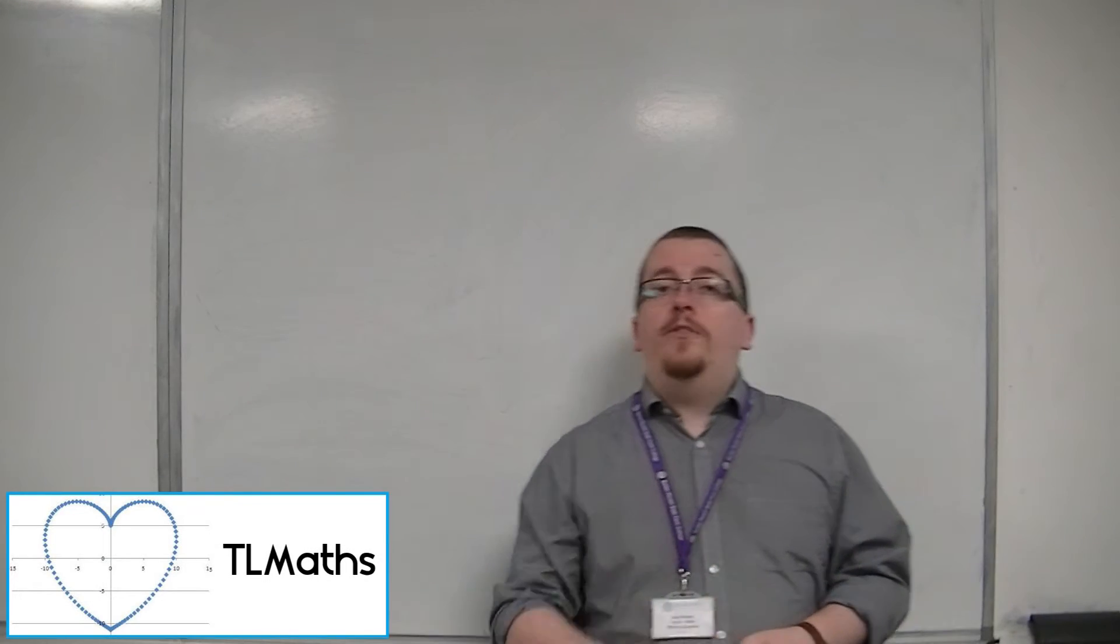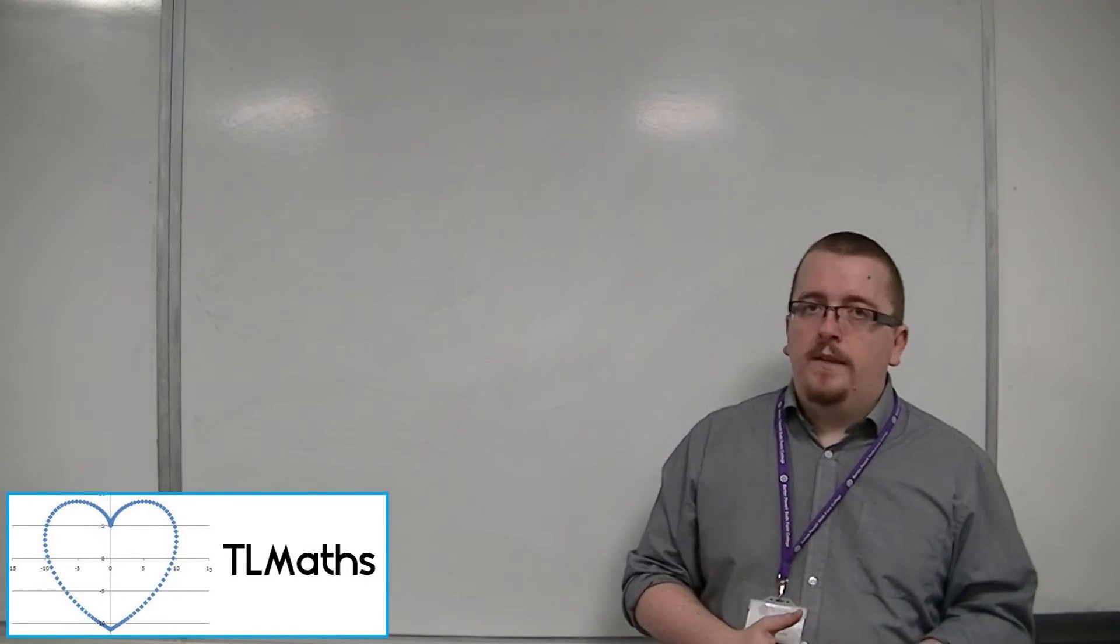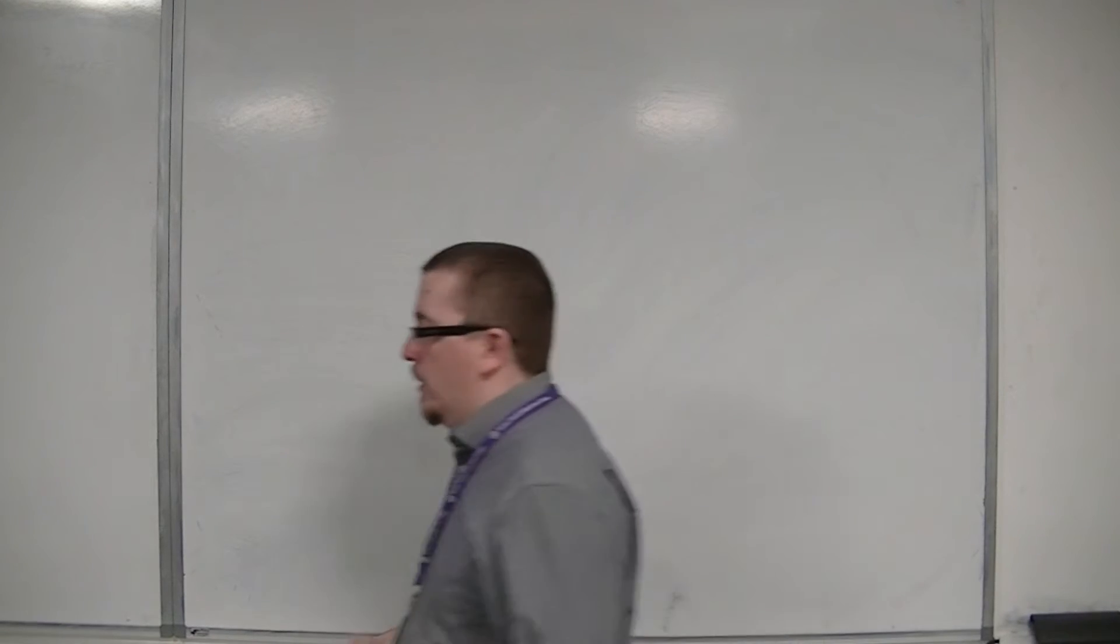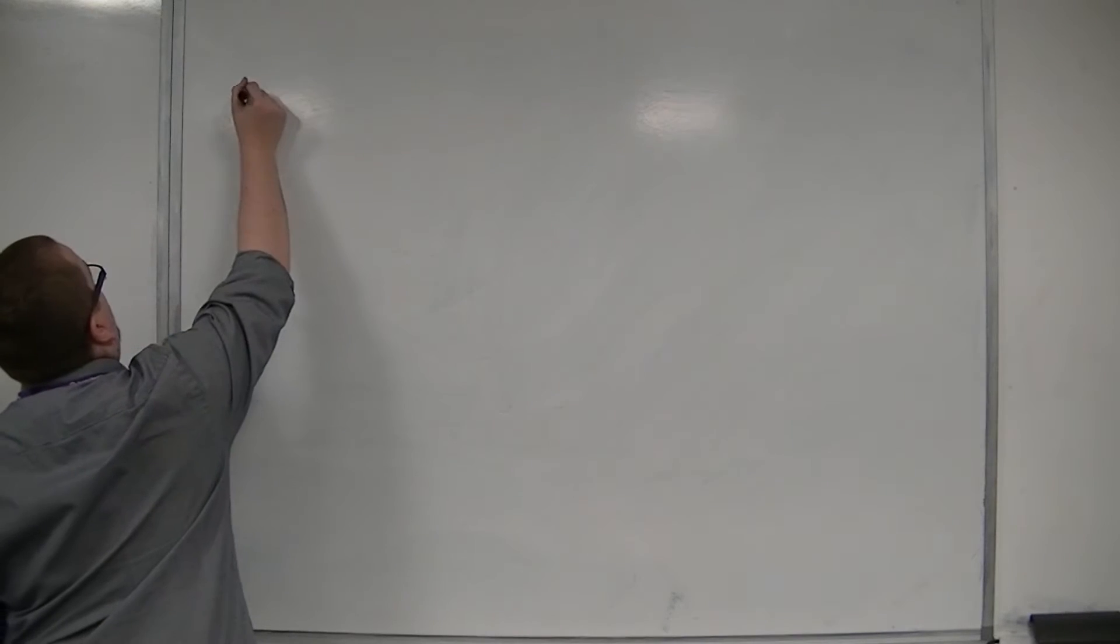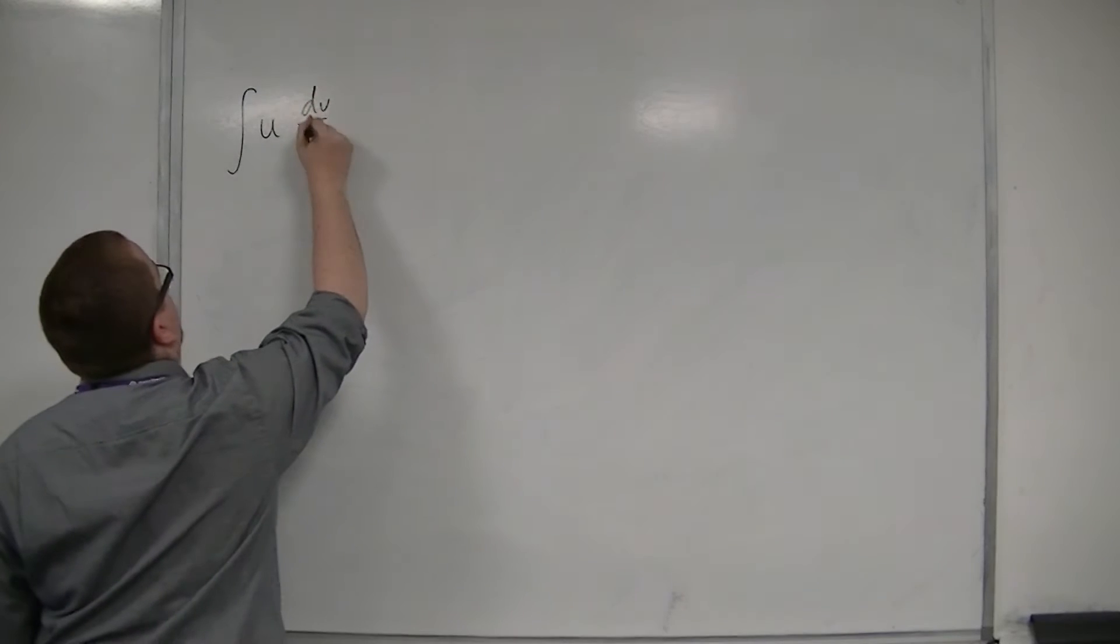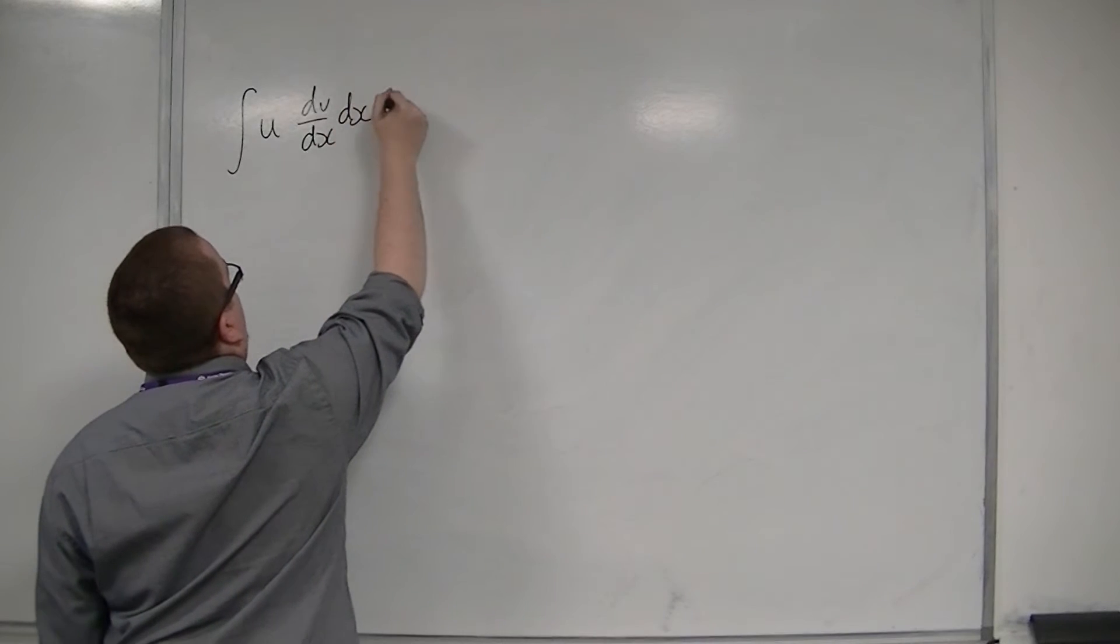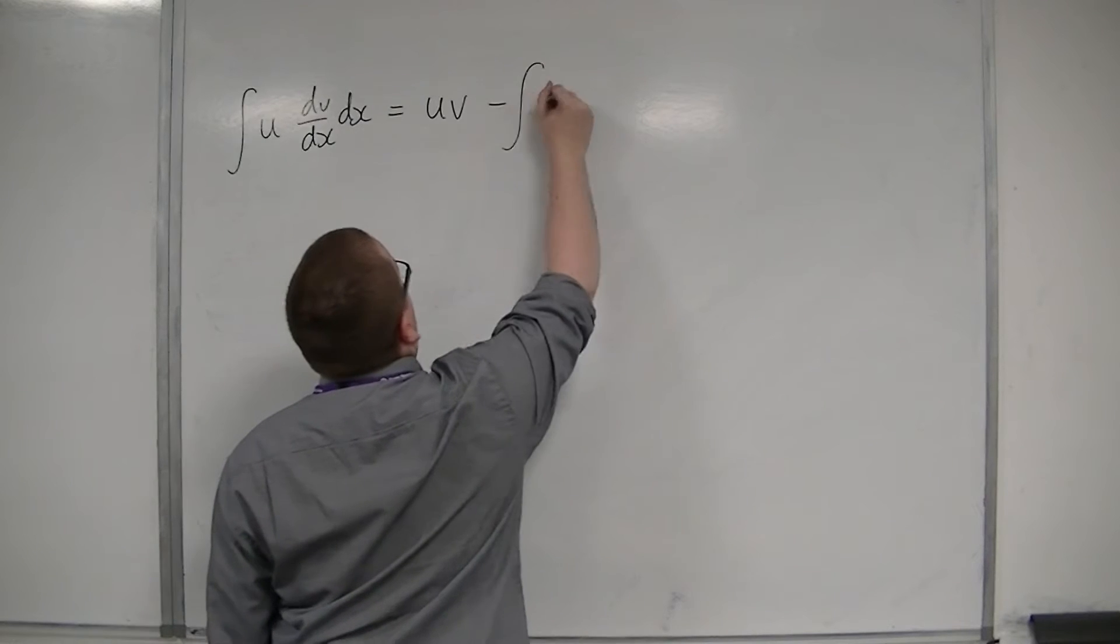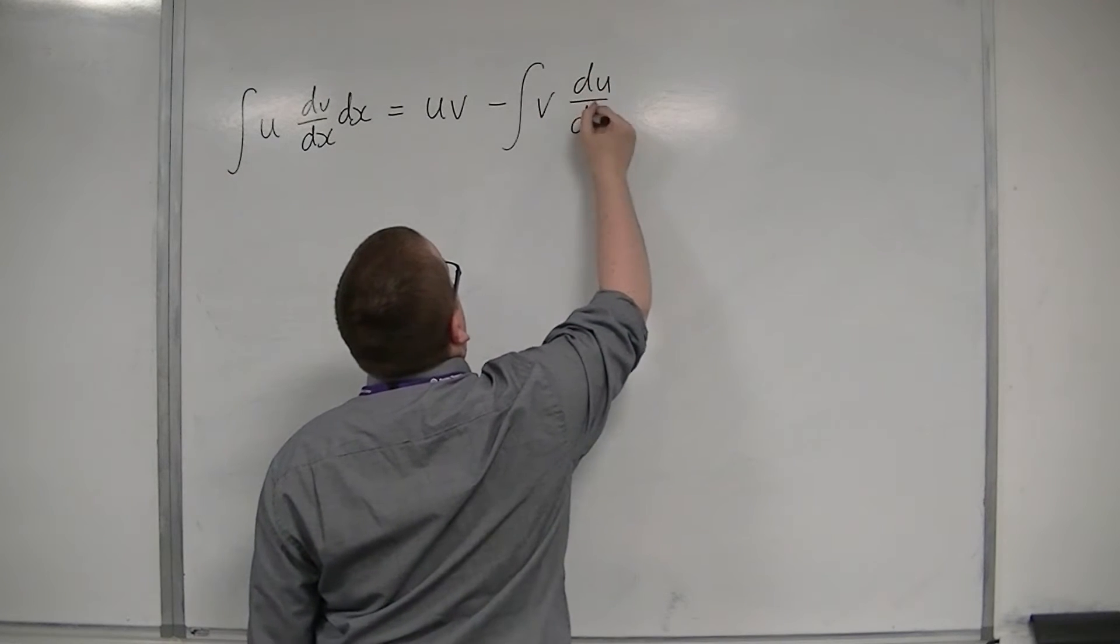In this video, I'm going to introduce integration by parts. Now, integration by parts, there is a formula that we are able to use that is in the formula booklet. And it's given by the integral of u dv by dx dx is equal to uv minus the integral of v du by dx dx.